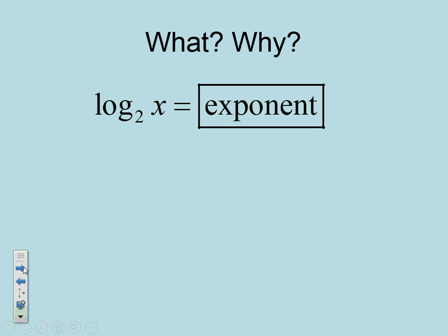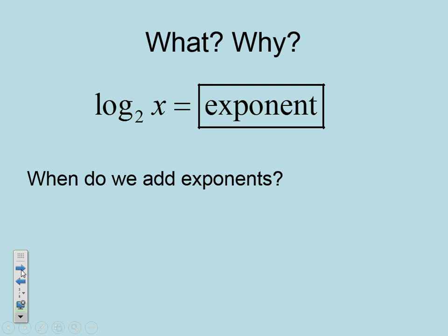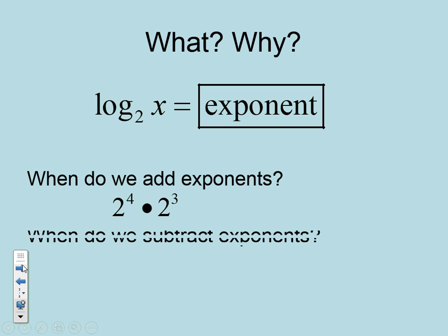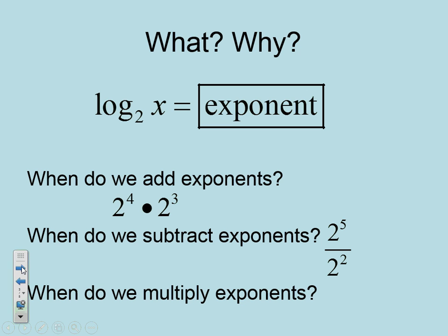This we don't have to write down — it's just a little explanation of why these properties are the way they are. We add our exponents when we are multiplying, we subtract our exponents when we're dividing, and we multiply our exponents when we have a power to a power. This is where these properties come from.